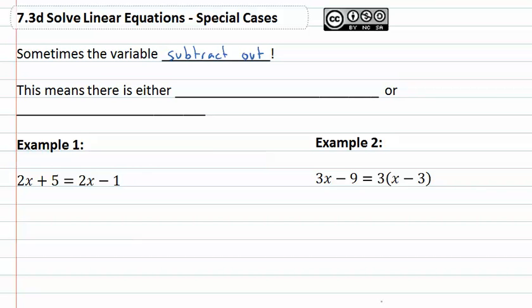Well, a lot of people get really scared when this happens and say oh, it must mean the answer is 0 or 19. If it subtracts out, it's not there. It can't equal a number.